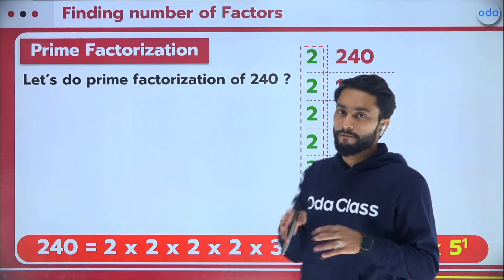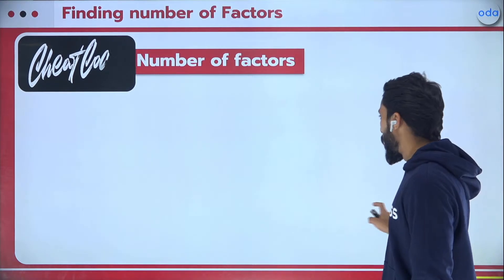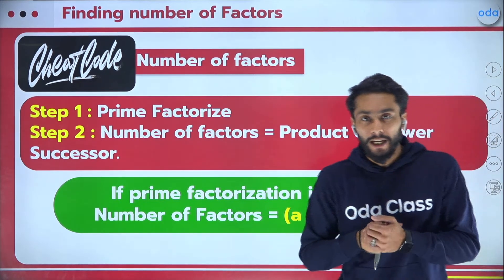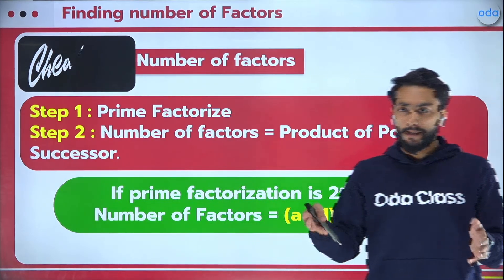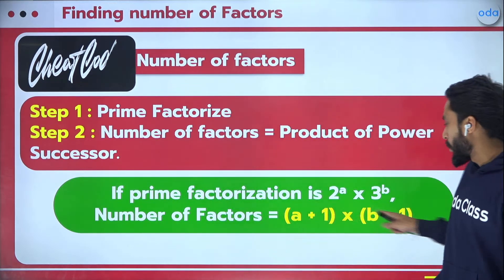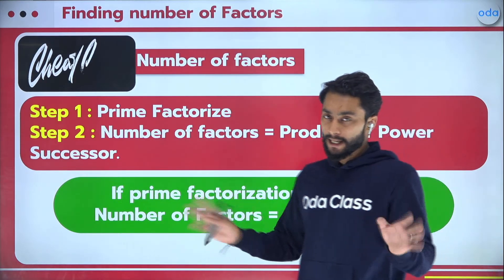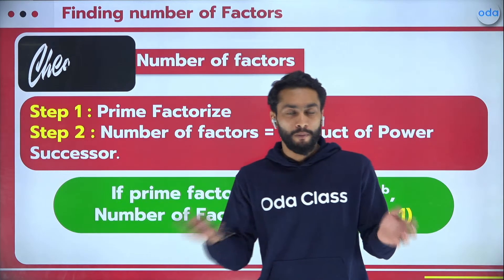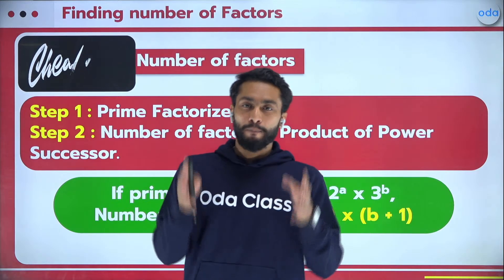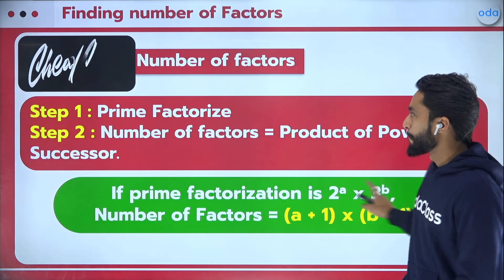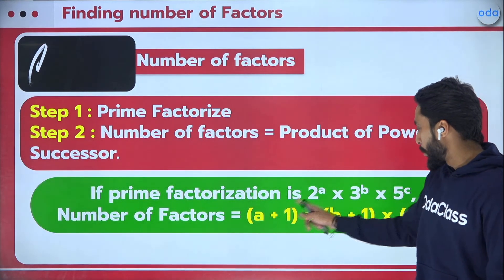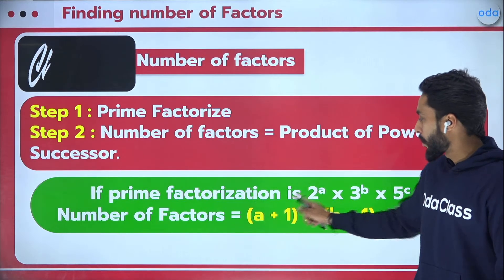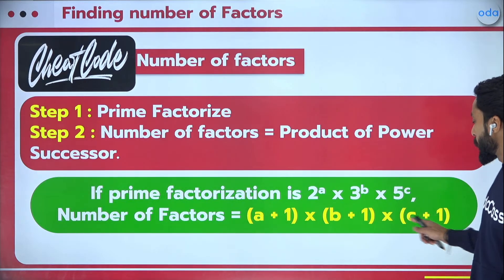The successor is just the next number — successor of 1 is 2, successor of a is a+1. So if a number is written as 2^a × 3^b × 5^c, the number of factors = (a+1)(b+1)(c+1). You prime factorize the number, write the powers, multiply the successors of those powers — and that gives you the number of factors!